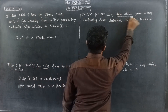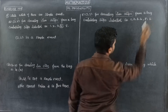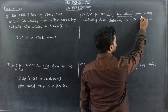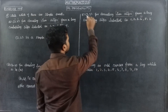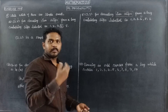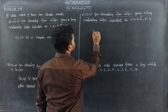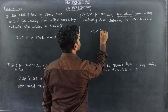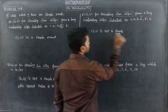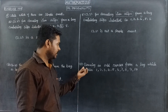So 3,3 from a bag containing slips labelled as 1, 2, 3, 4, 5. Only 1 slip labelled 3 is in the bag, so we can't take 3 again. So 3,3 is not a simple event. We can't take 3 as twice, so 3,3 is not a simple event.